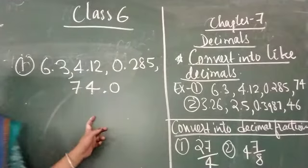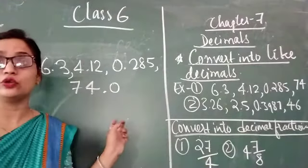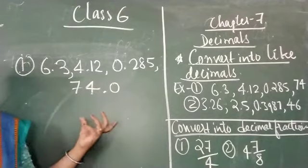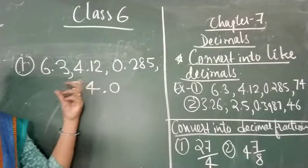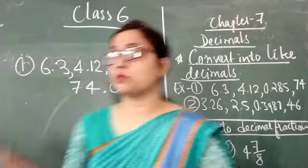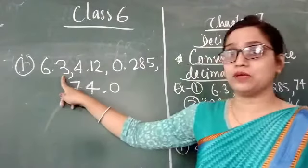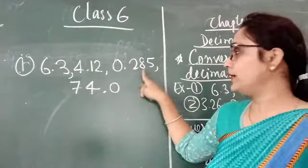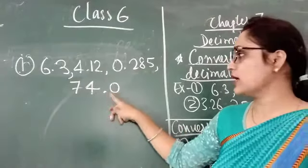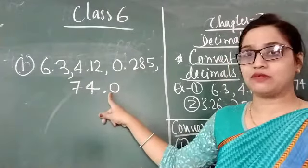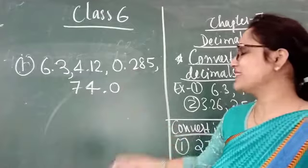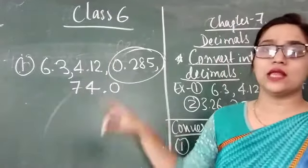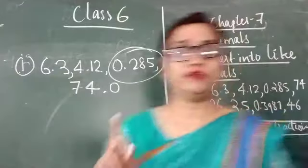Now the next step is to find the maximum decimal places. So maximum decimal places: 6.3 has 1 place value, 4.12 has 2 place values, 0.285 has 3 place values, and 74.0 has 1 place value. The maximum number of decimal place values is 3, from 0.285.